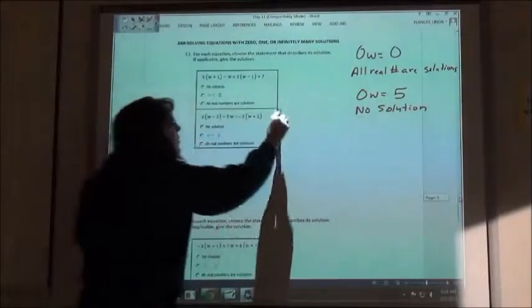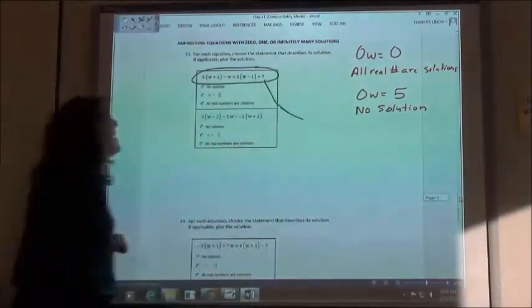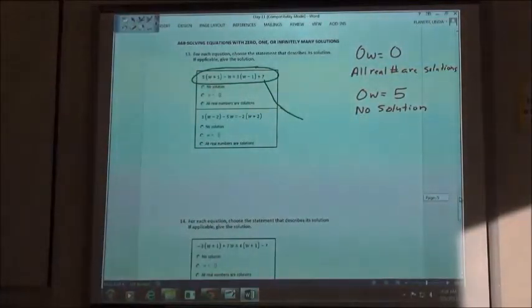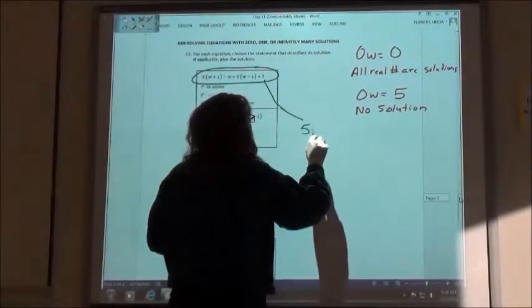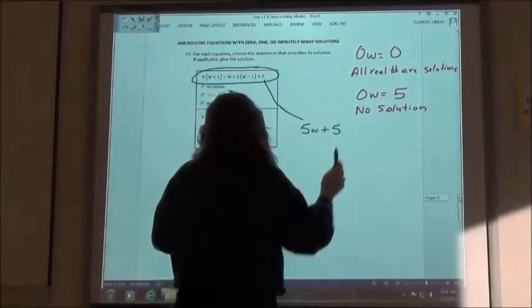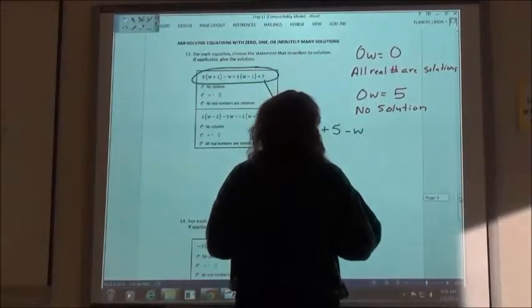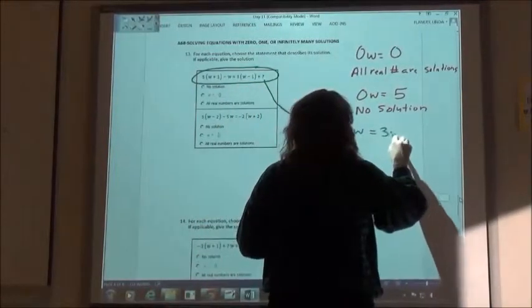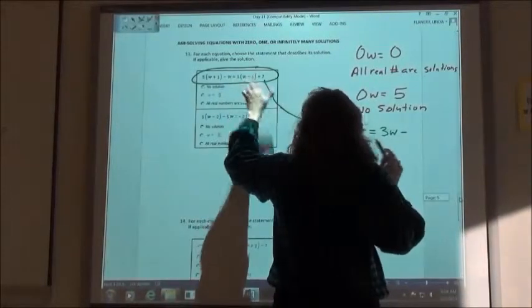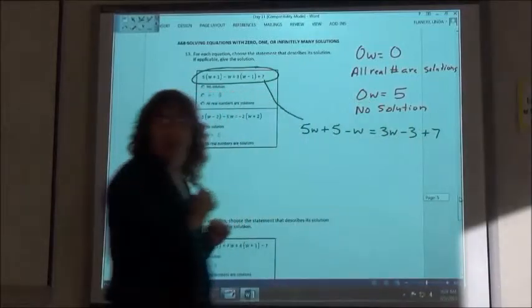So I'm going to do this one down here. First of all, get rid of my parentheses. So 5w plus 5 minus that w on the end is going to equal 3w minus 3 plus the 7 on the end, right?